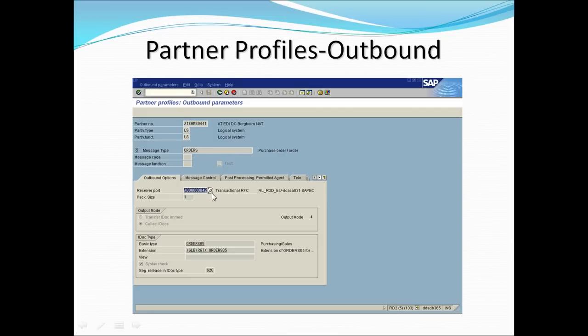There are two types of data transfer: outbound and inbound. When you send an IDOC to the outside world it is outbound; when you receive an IDOC it is inbound. In the outbound parameters you maintain the partner number (the receiver), the message type, and the receiver port — which is the alias name for the RFC destination mapping to username, password, and application server name.